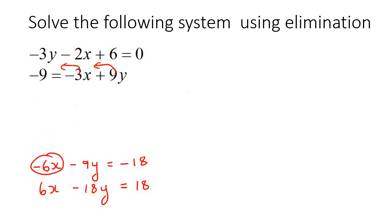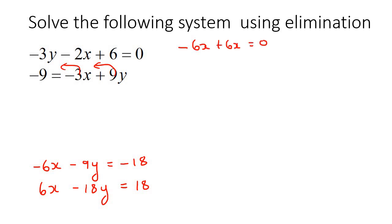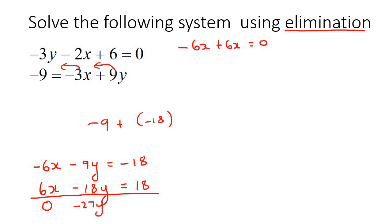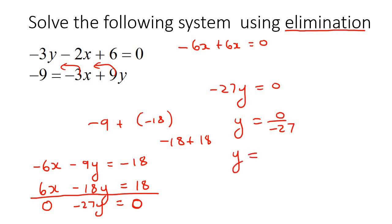Now we can see numbers that are the same. You need to decide whether to add or subtract. These x's are negative 6 and positive 6, so adding them gives zero — that will eliminate all the x's, which is why we call it elimination. Adding the top and bottom equations: zero for x, then minus 9 plus minus 18 gives minus 27y, and minus 18 plus 18 gives zero. So we get negative 27y equals zero, meaning y equals zero divided by negative 27, so y equals zero.